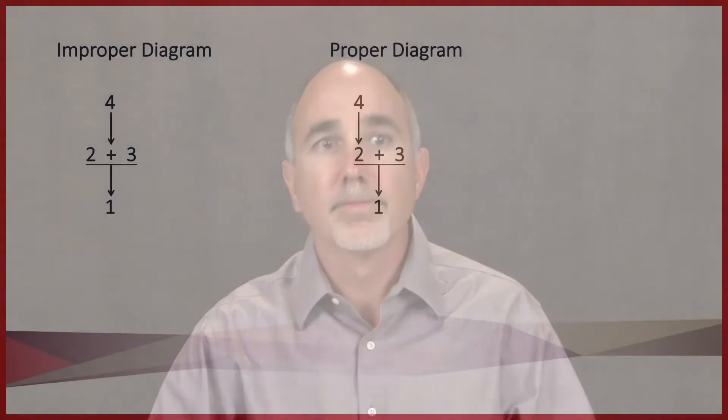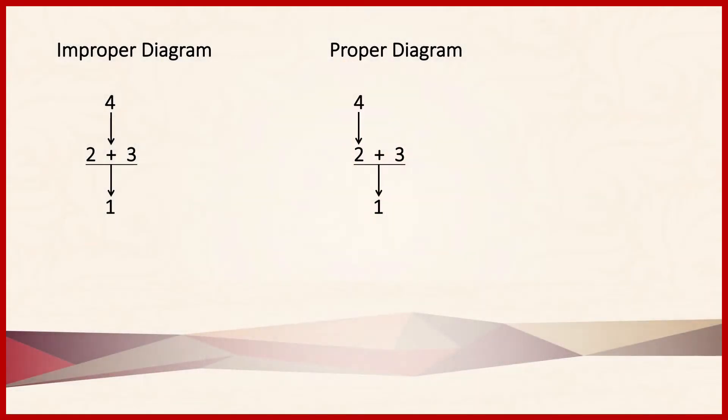Because there are multiple levels in the Beardsley diagram of a compound argument, there's a mistake that commonly appears. In the diagram on the left, we see that there's an arrow leading from Proposition 4 to a plus sign — that doesn't mean anything. In the diagram on the right, the arrow is leading to the number 2, which is correct. Arrows should never lead to plus signs.